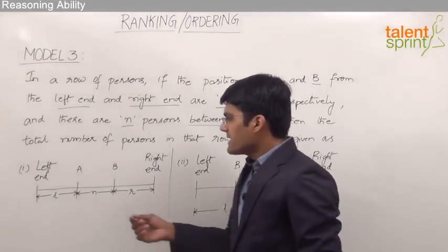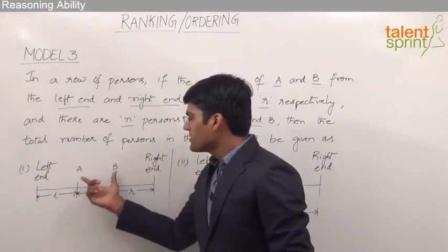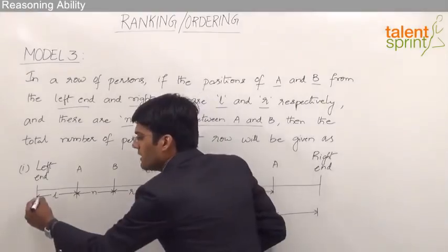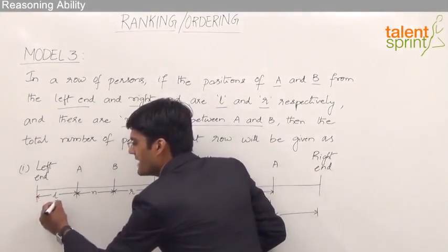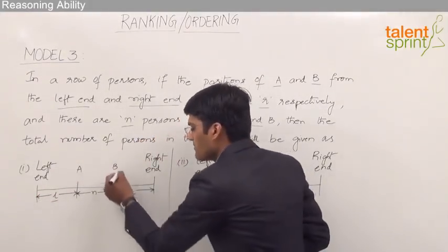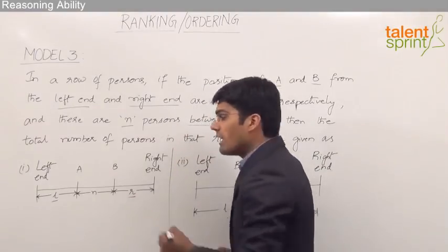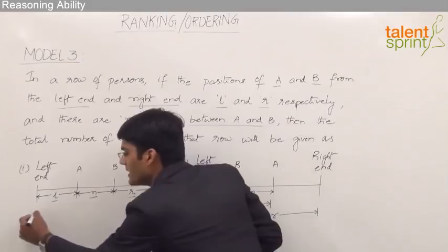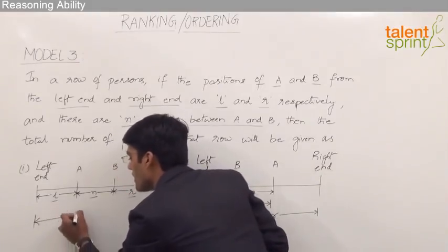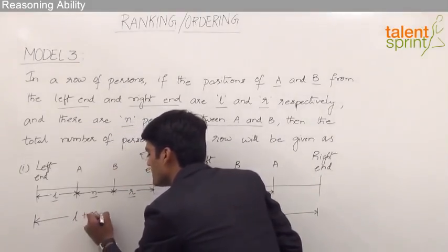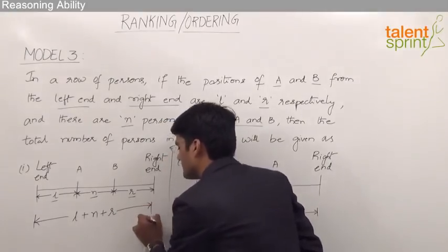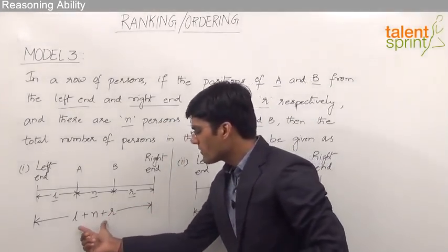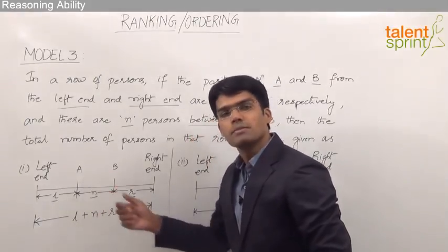In the first case, let us take the left end, the right end, and the positions of A and B as shown. As given in the question, the position of A from the left end is L, the position of B from the right end is R, and in between A and B we have N persons. So the total number of persons in the row is L plus N plus R.